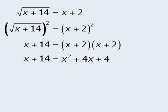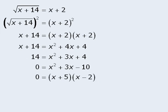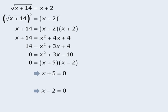Since we seem to have a quadratic equation here, we'll set the equation equal to 0 by first subtracting x from both sides, and then subtracting 14 from both sides. Now that the equation is set equal to 0, we will factor the right-hand side. Now if x plus 5 times x minus 2 equals 0, then either x plus 5 equals 0, or x minus 2 equals 0. If x plus 5 equals 0, then x must equal negative 5. And if x minus 2 equals 0, then x must equal 2.